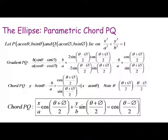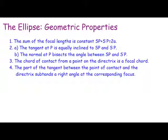The parametric chord PQ is quite involved to derive — you need sum-to-product and product-to-sum trig identities. The equation of the parametric chord PQ comes from points P and Q with parameters theta and phi on the ellipse, and this is a difficult equation to derive requiring revision of sum-to-differences trig results.